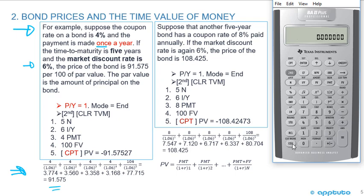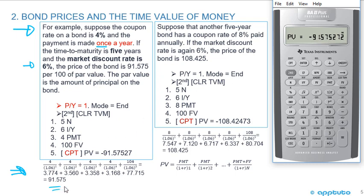So it's a five-year bond, the market rate is 6% for I/Y, the payment is 4 because it's annual, and the future value is 100 for par value. Computing the present value, we get 91.5752 — so 91.575. In this case, the coupon rate is 4% but the market discount rate has gone up to 6%, so as interest rates go up, the price goes down — that's why it's selling below par.